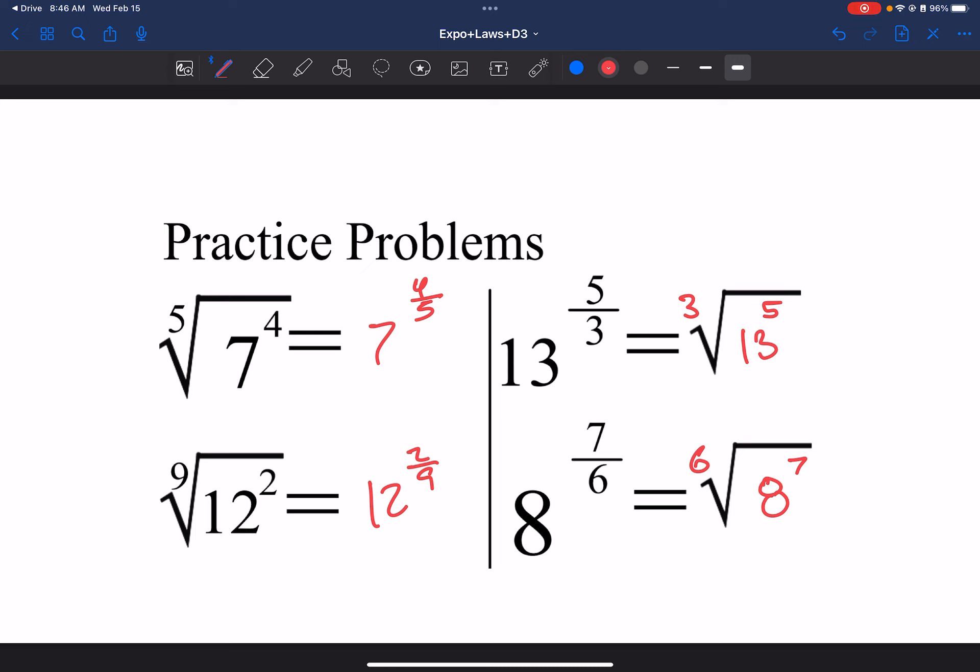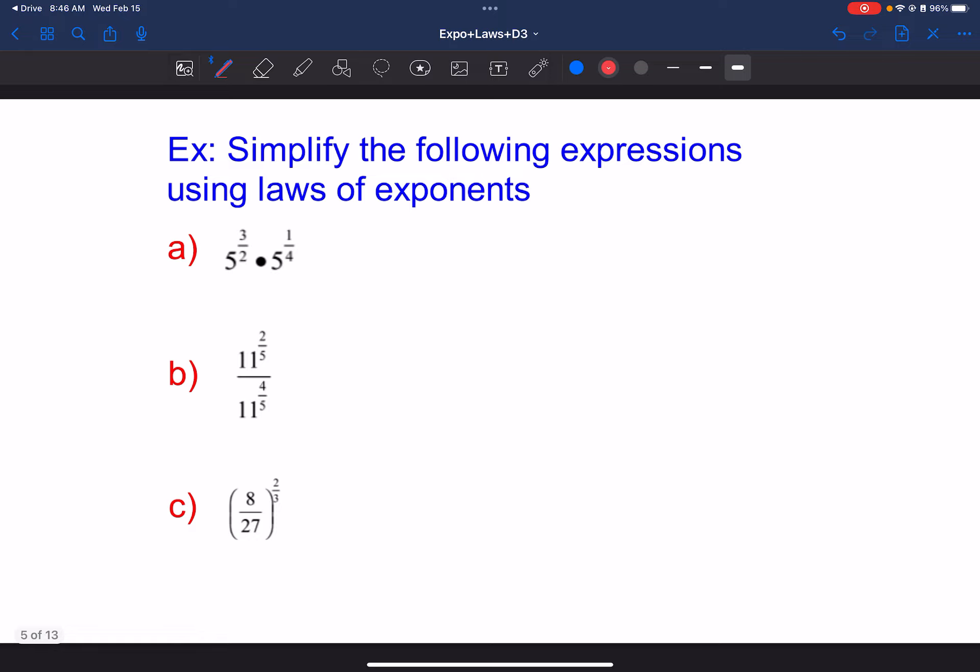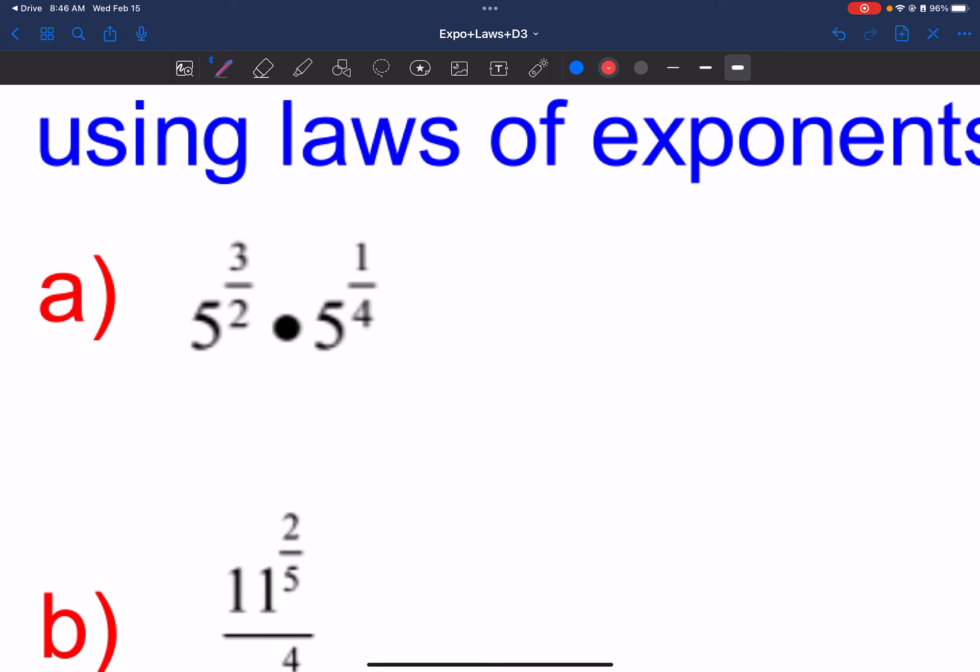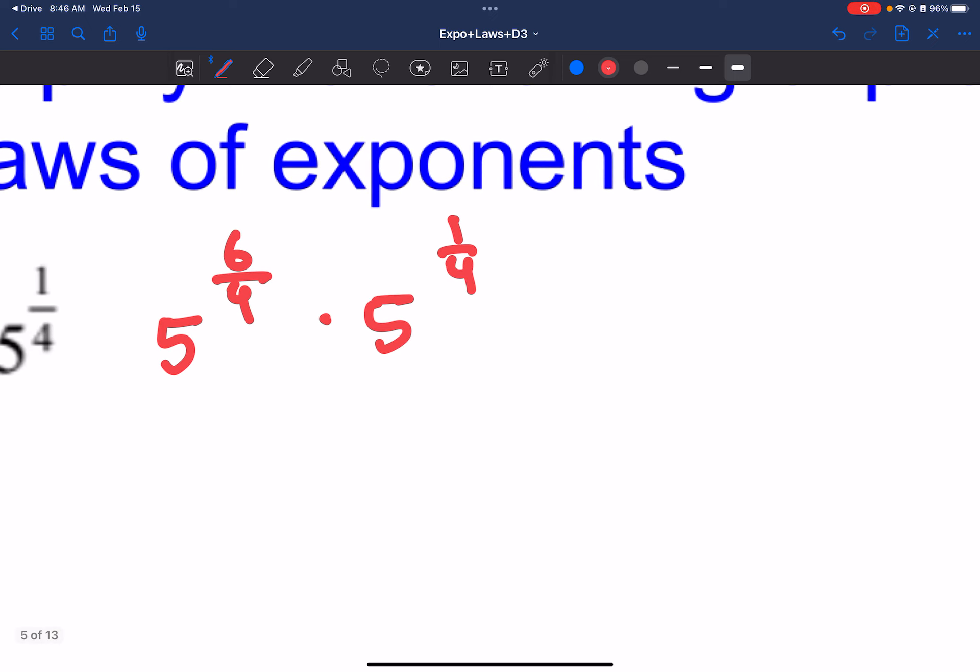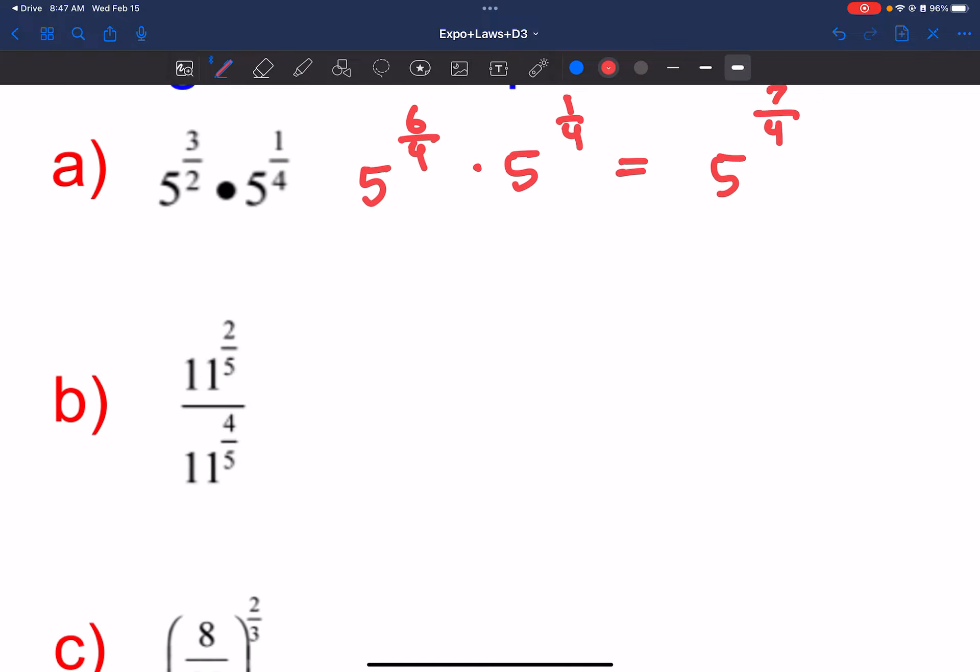So the reason why we care about this is now we can use radicals, we can use the exponential laws that we've covered with radicals, which is kind of a big deal. So let's simplify these expressions. Going from the first one, this is multiplying, so typically we would add these exponents. But the exponents don't have the same base.